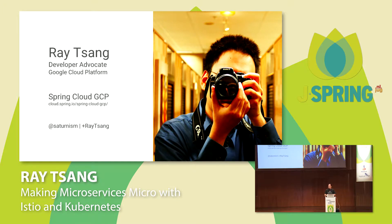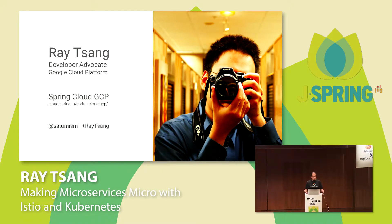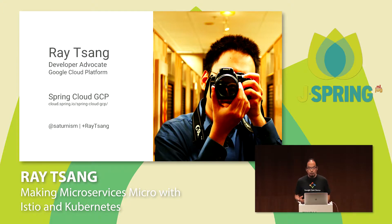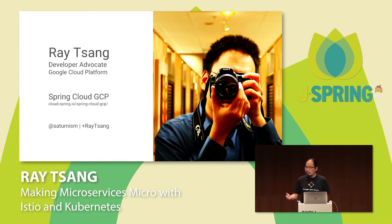My name is Ray. I'm a developer advocate for the Google Cloud Platform. My job is to bring the latest and greatest technology that Google Cloud has to offer, as well as open source projects from Google — especially for Java developers. One of the projects I work on personally is Spring Cloud GCP, which provides nice starters for Spring and Spring Boot so you can use our services without writing a lot of boilerplate code. If you have any questions or feedback, please contact me on Twitter at Saturnism.